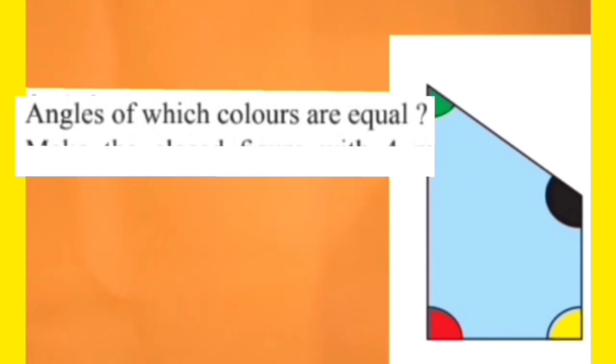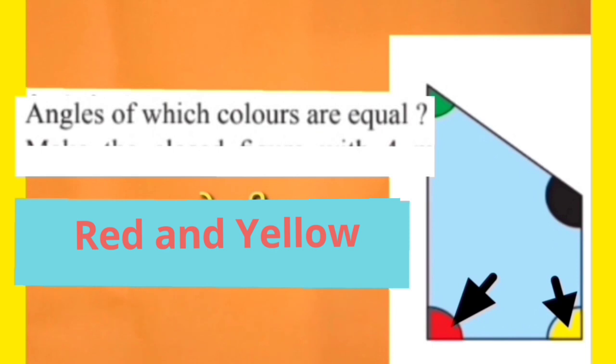Angles of which colors are equal? Dear students, after looking at this picture, we come to know that the angles of red and yellow color are equal.